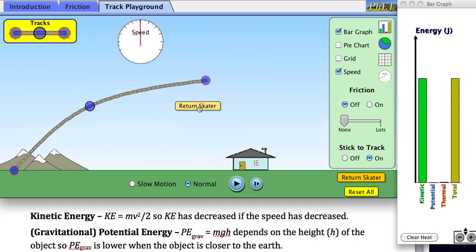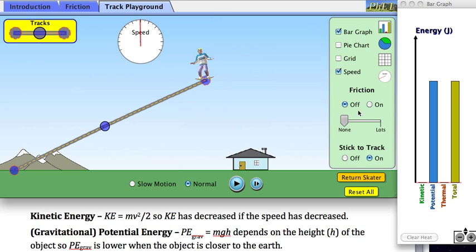Let me stop this, return the skater, and turn on some friction. Why not? What happens if there's friction? Well, energy will go into thermal energy. As the gravitational potential energy goes down, both kinetic and thermal will go up.